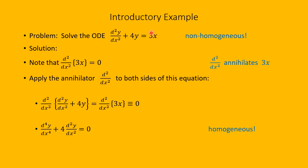To solve this, I'd like to have 0 on one side. If I differentiate 3x with respect to x twice — in other words, take the second derivative of 3x with respect to x — we get 0. So what we'll do is apply the annihilator of this to both sides of the equation: apply the second derivative with respect to x to both sides of this equation.